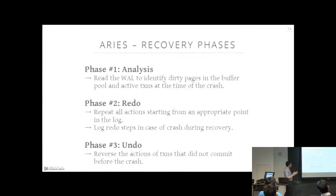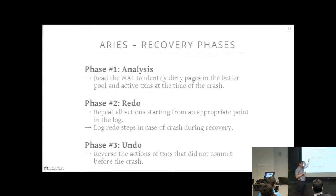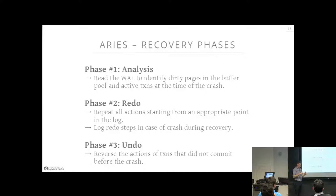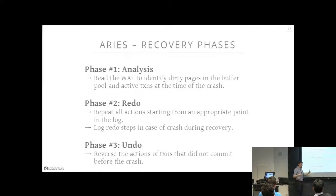ARIES has three phases. First, an analysis phase where you jump to the last checkpoint and scan forward to figure out what was going on. Second, a redo phase where you apply all changes from beginning to end. Third, an undo phase where you go back in reverse order and roll back changes from transactions that shouldn't have committed. Every redo and undo step during recovery is itself logged as compensating log records.